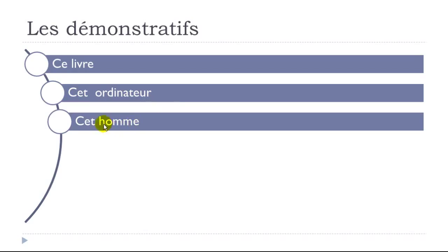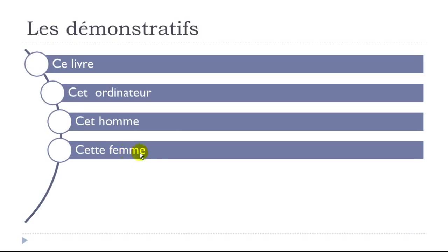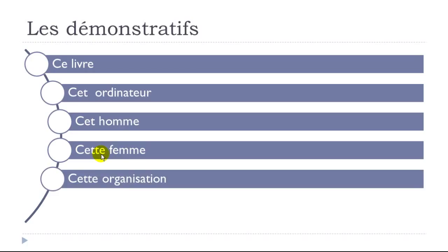Third example: 'homme' — man. We have this H letter here, but H is not pronounced, so you get the sound of O at the beginning. That's why you use 'cet': 'cet homme.' For the feminine word 'femme' — woman — we only have one option: 'cette femme.' Same for 'organisation': even though it starts with a vowel, for the feminine demonstrative it doesn't change — 'cette organisation.'